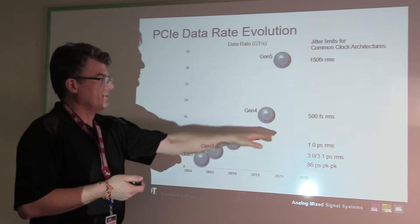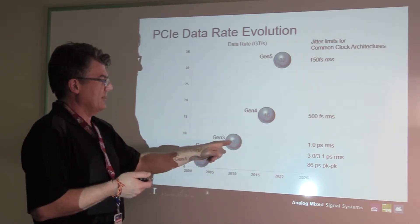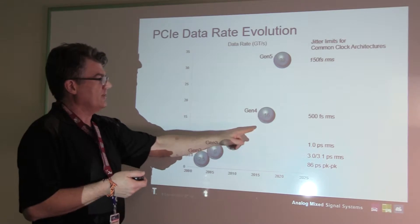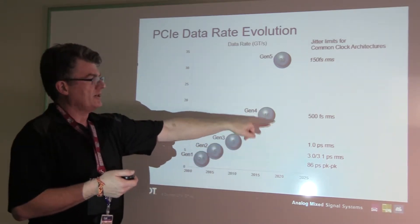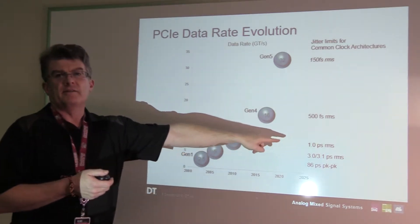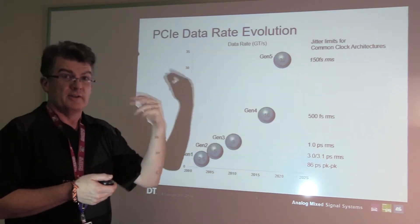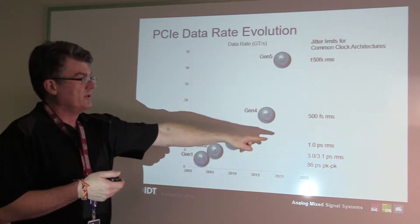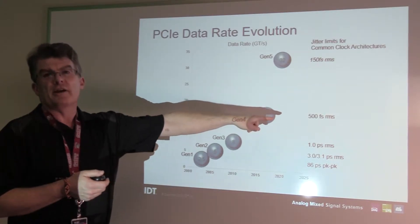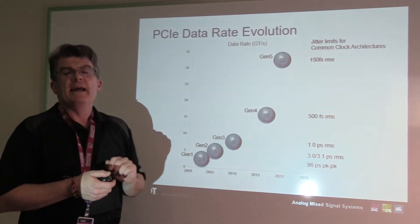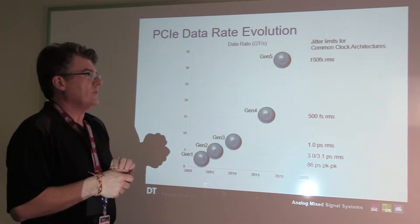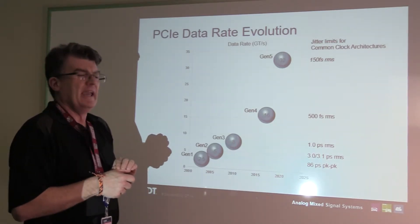Because we're dealing with RMS values and the data rate doubles to 16 Gbps at Gen 4, you would think the Gen 4 clock spec would be 1 picosecond divided by the square root of 2. Again, it's a doubling but it's RMS, which gives 700 femtoseconds for the Gen 4 clock spec — and that is actually what is the case.